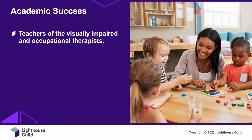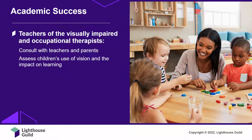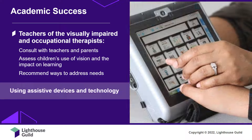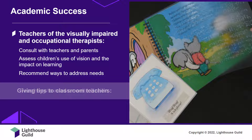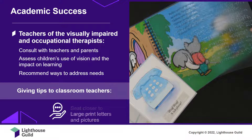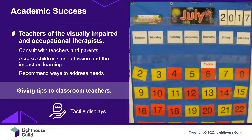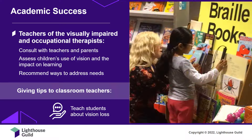Teachers of the visually impaired and occupational therapists consult with teachers and parents to support the growth and success of children with visual impairment in school. They assess the use of vision and how vision loss is impacting learning, and recommend ways to address individual needs. This can range from training children to use assistive devices and technology for reading or writing print, to teaching how to read or write braille, to giving simple tips to the classroom teacher — such as seating children closer to the board, decorating the classroom with large print letters and pictures, creating displays using tactile or raised materials, and helping other students understand vision loss and how they can best interact with children who are visually impaired.